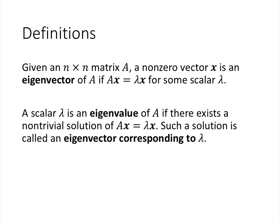Here's the formal definition. When we have an n-by-n matrix A, a nonzero vector x is an eigenvector of A if when we multiply the matrix A by x, what we get is lambda times x for some scalar lambda. The symbol here is the lowercase Greek letter lambda. And a scalar lambda is an eigenvalue of A if there exists a non-trivial solution of Ax equals lambda x — in other words, if there is some vector for which A times that vector is that scalar lambda times that vector. When that happens, we say that a solution to that equation is an eigenvector corresponding to lambda.